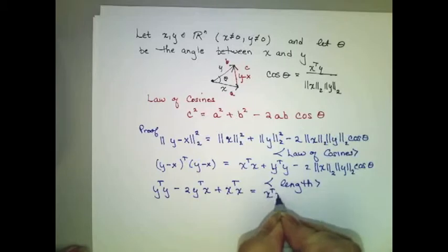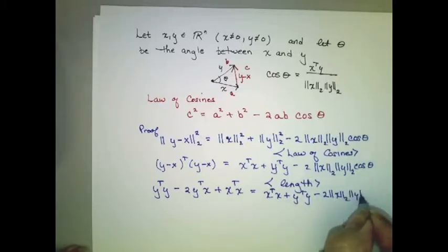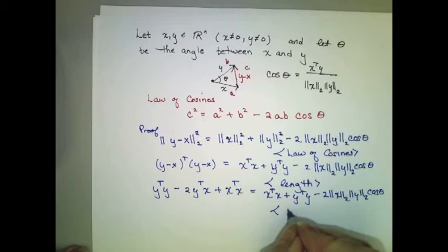equals x transpose x plus y transpose y minus 2 times the length of x times the length of y times the cosine of theta. And I'm going to justify that with a lemma which is an extension of homework.